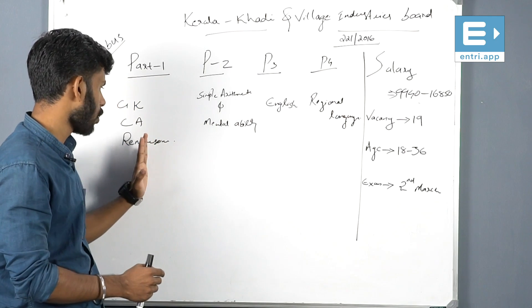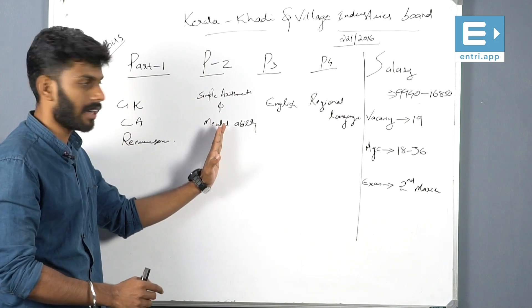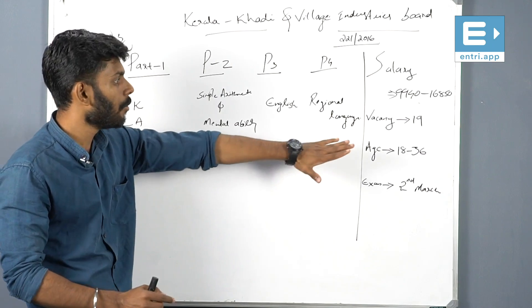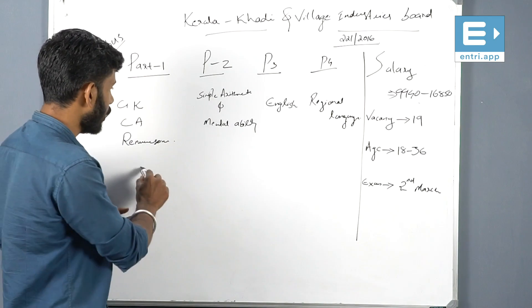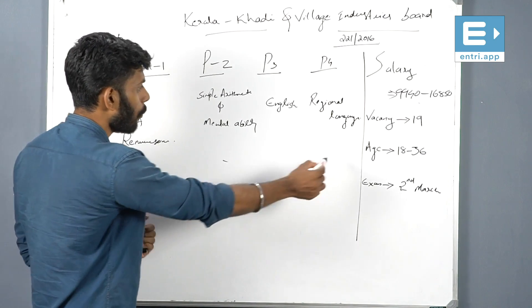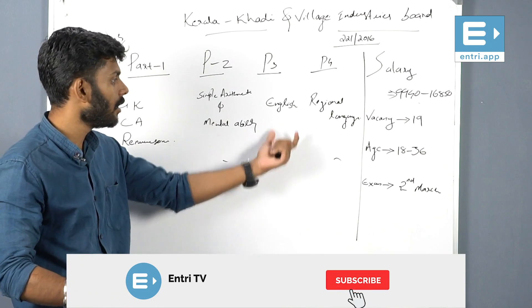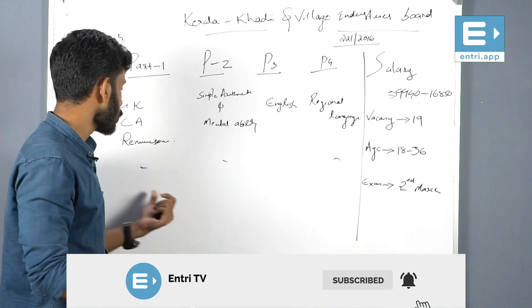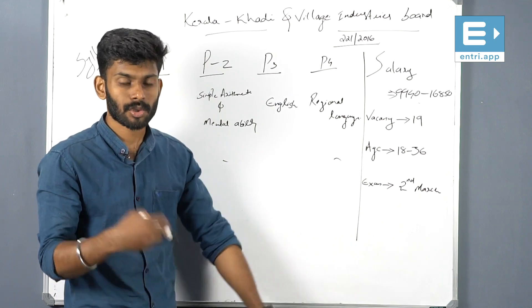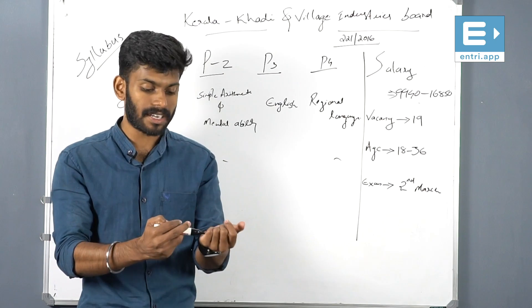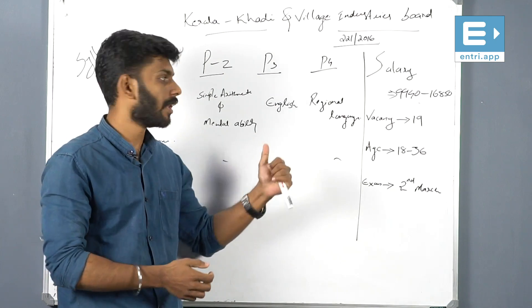To summarize: Part 1 is general knowledge, Part 2 is simple arithmetic and mental ability, Part 3 is English, and Part 4 is regional language. Parts 1, 2, and 4 will have questions in Malayalam, while Part 3 is in English. You can practice the questions at LDC level in Malayalam.